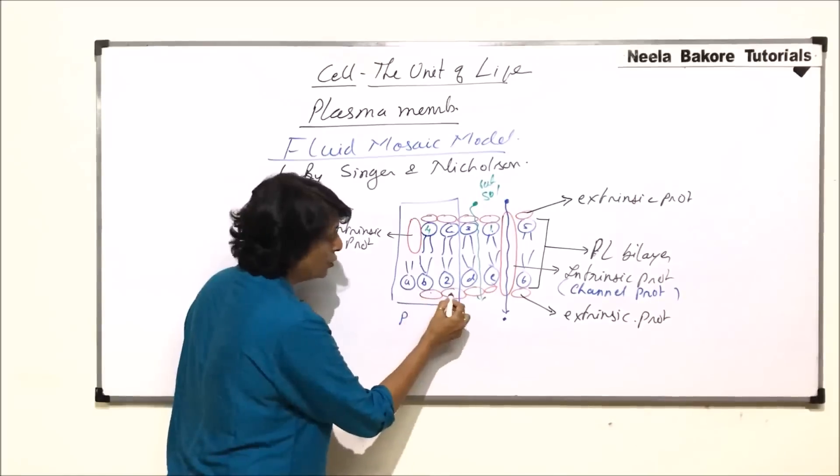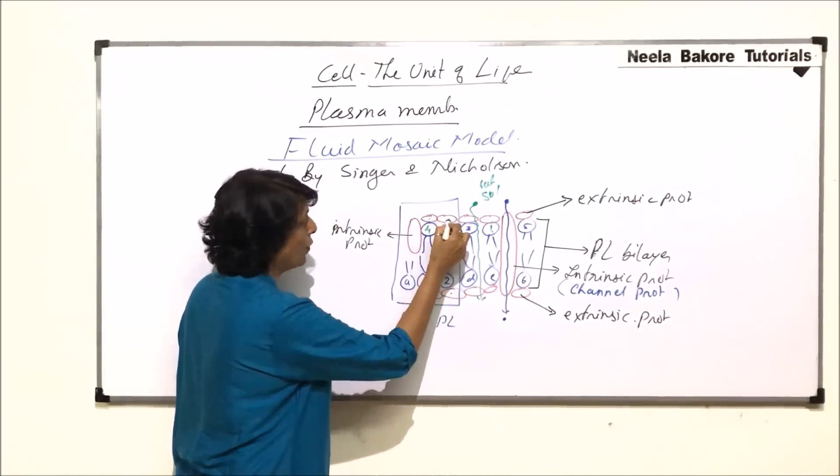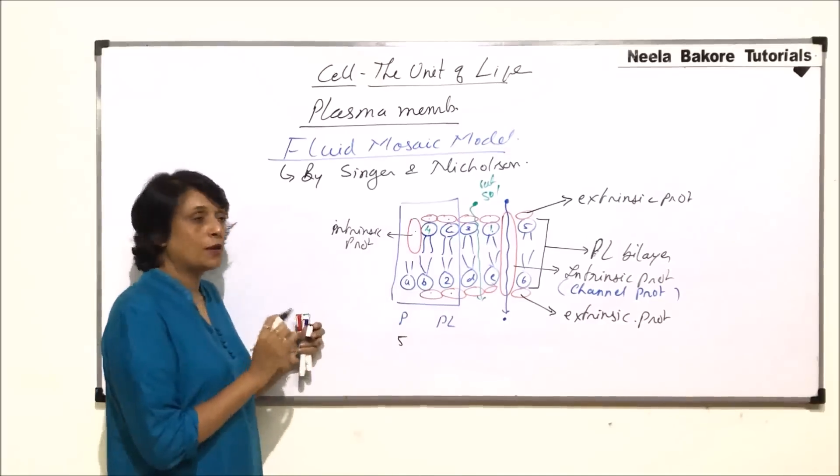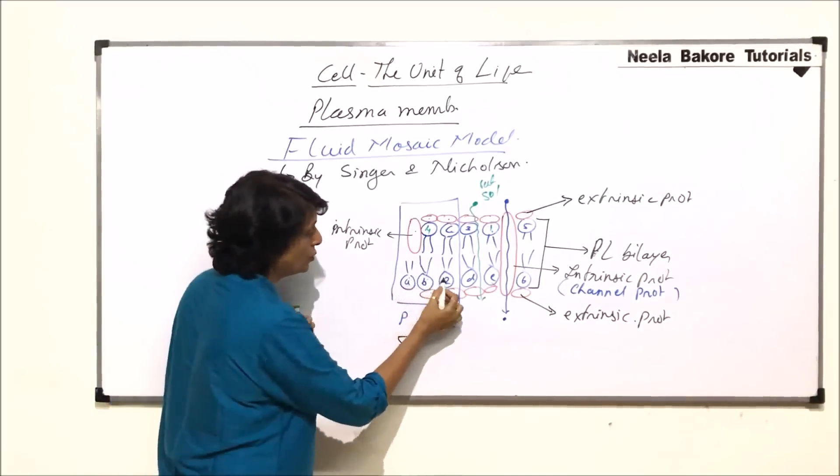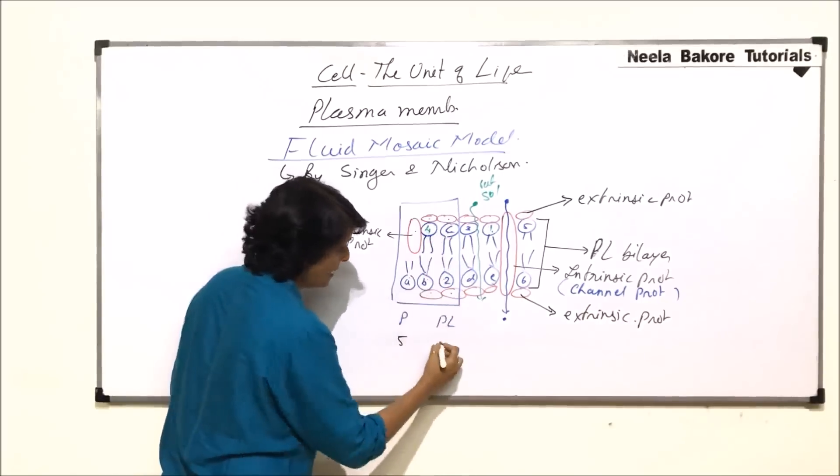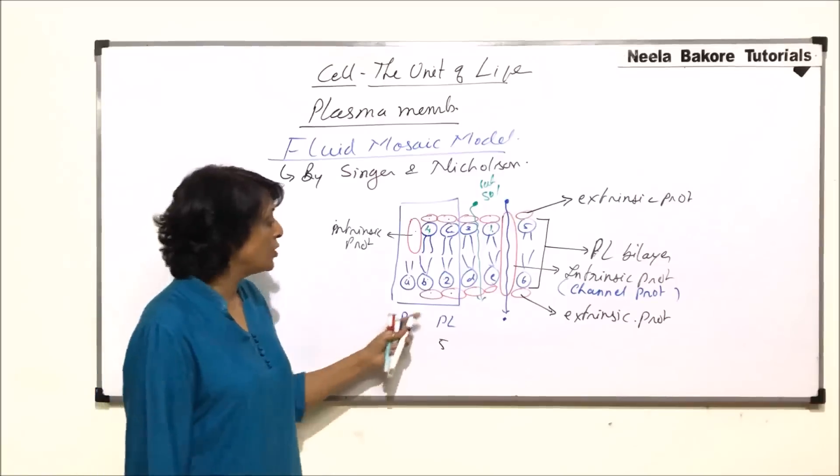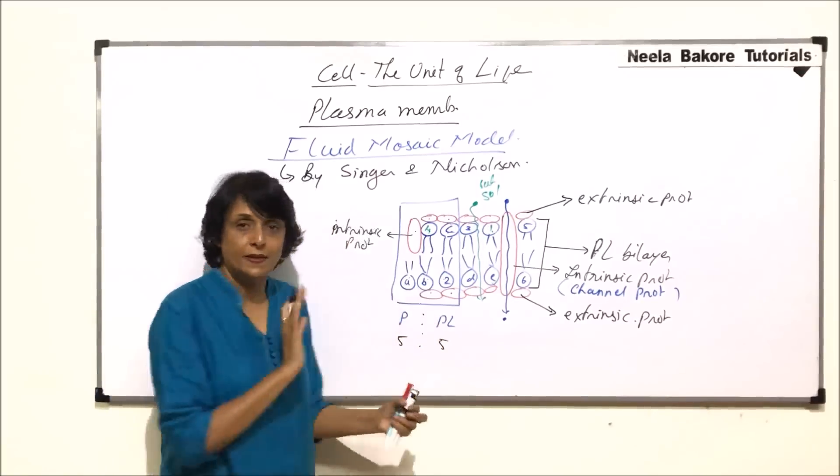Counting: one, two extrinsic, three, four extrinsic, and five. So there are five proteins. How many phospholipids? One, two, three, four, and five phospholipids. So at this moment the ratio of proteins to phospholipids is this.